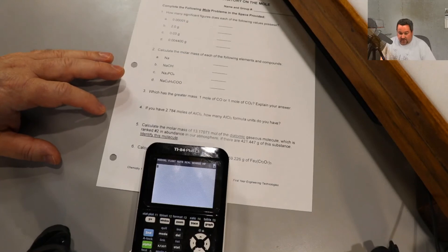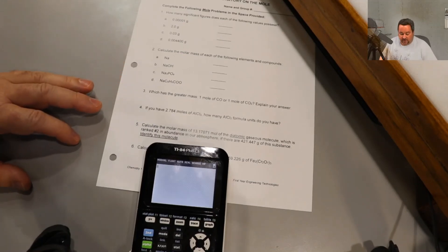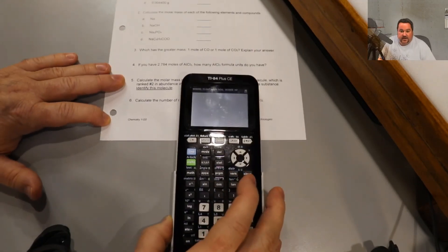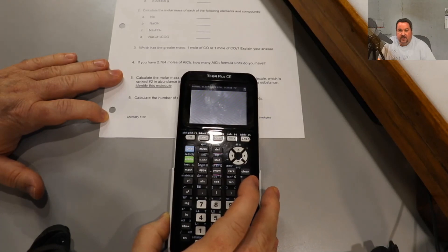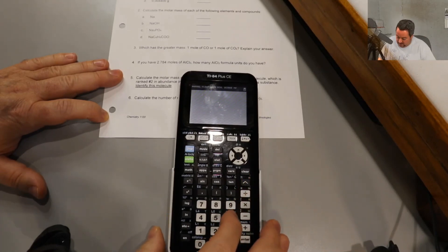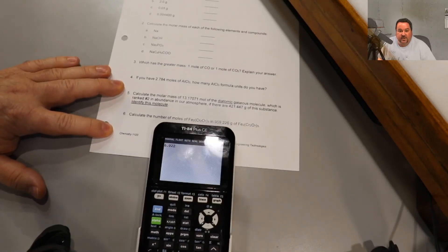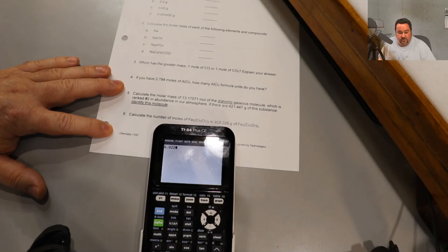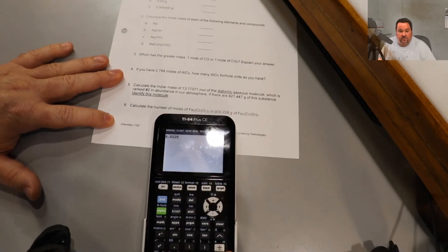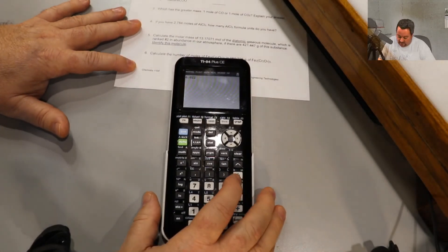One final bit of advice. Learn how to use your calculator. If you're using a TI series like this one, if I'm going to enter Avogadro's number 6.022 times 10 to the power of 23, I don't use the multiplication key here on the keyboard.